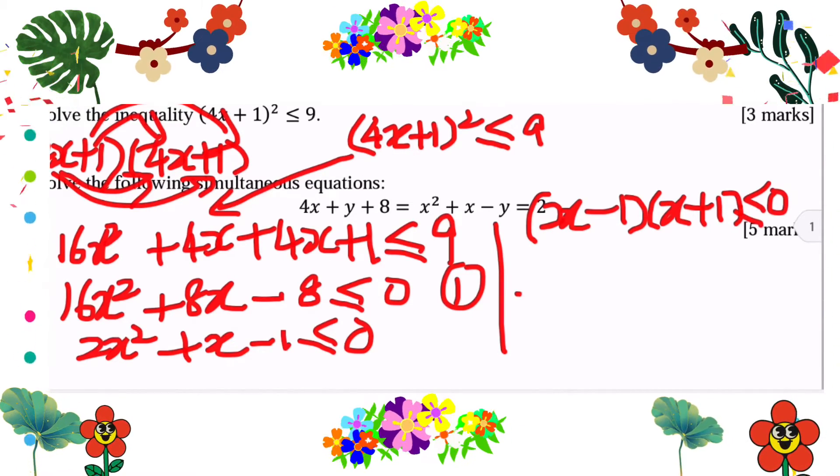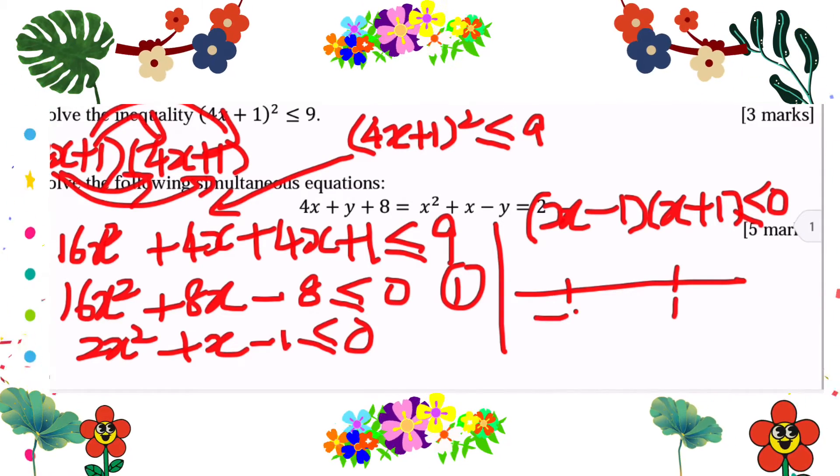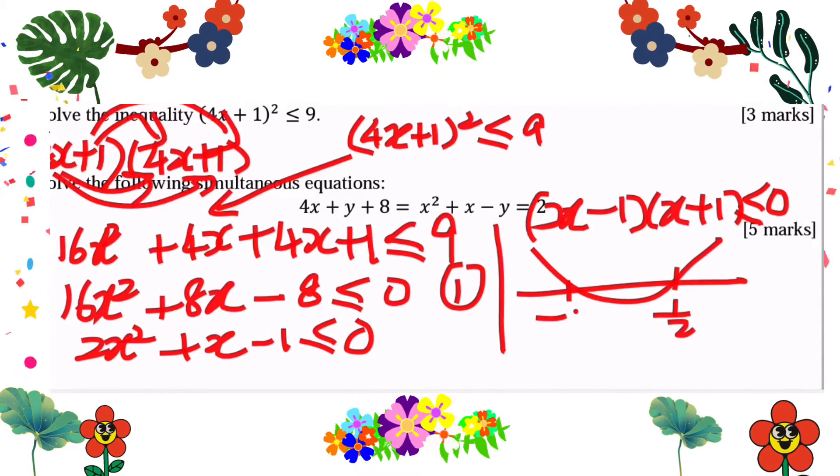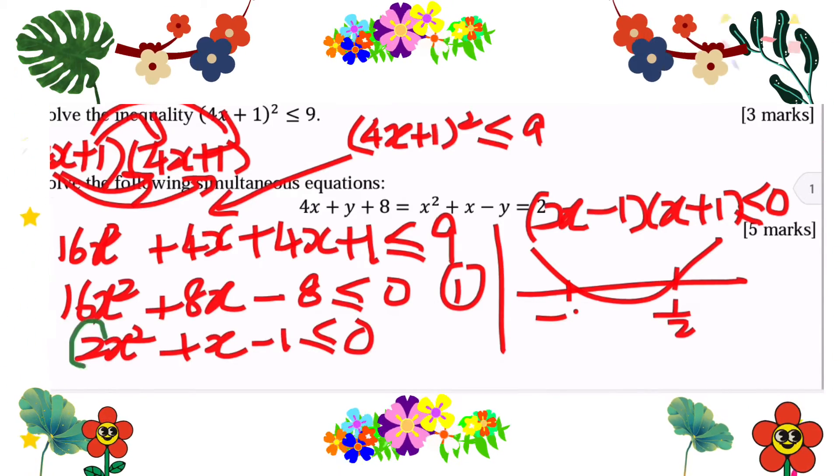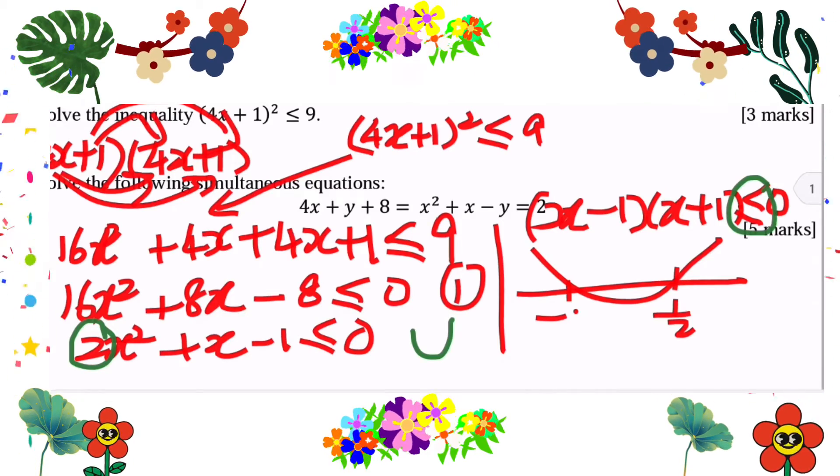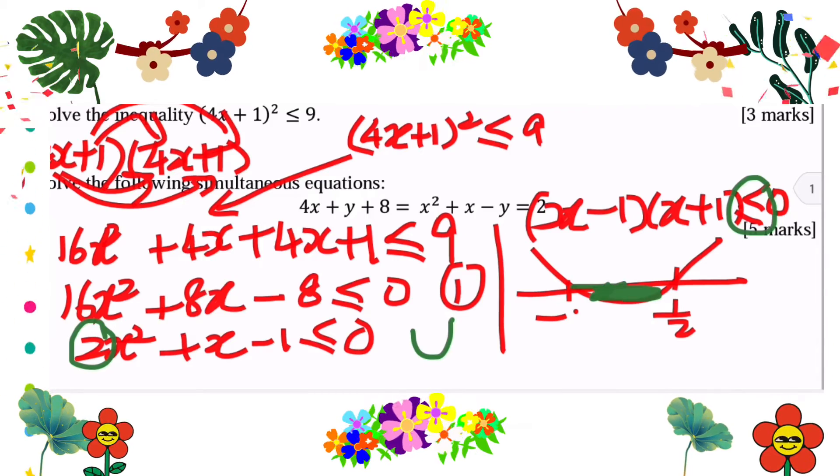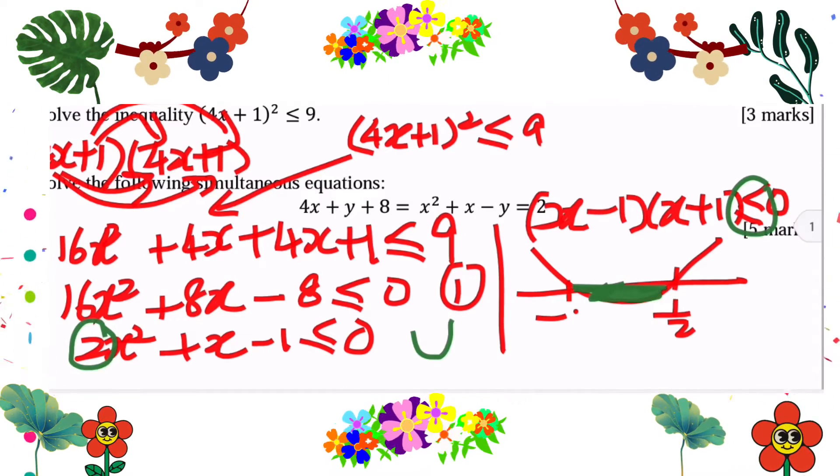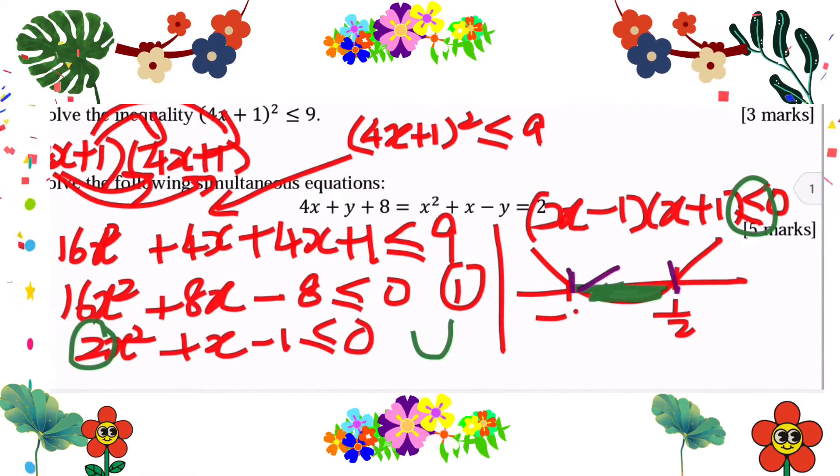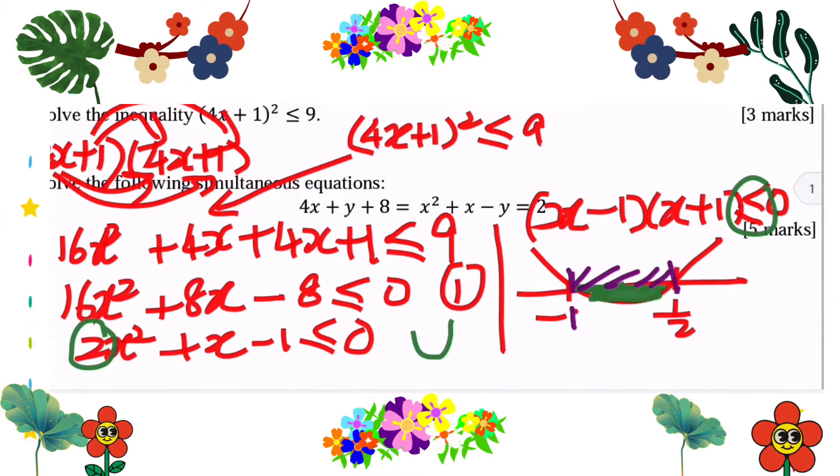Then you need to sketch a simple U-shape. The smaller value to the left, bigger value to the right. So negative 1 to the left, positive half to the right. Since it is less than 0, meaning that the function is having negative value, so the range of x should be in between negative 1 and half.